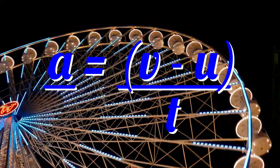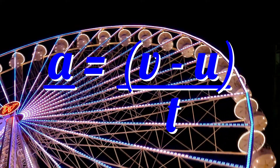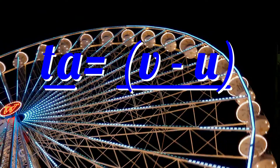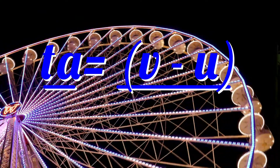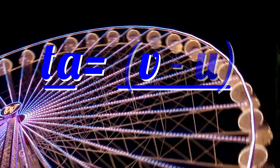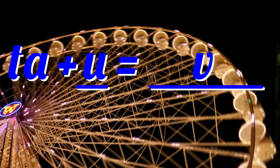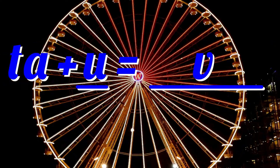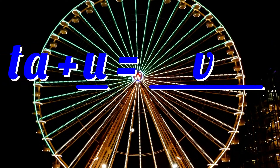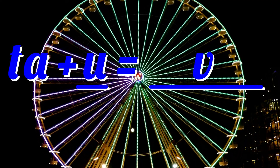To make final velocity the subject of the equation, first multiply through by time as before to get T A equals V minus U. Then add U to both sides, cancelling out the U on the right. T A plus U equals V. Time multiplied by acceleration plus start velocity equals final velocity.